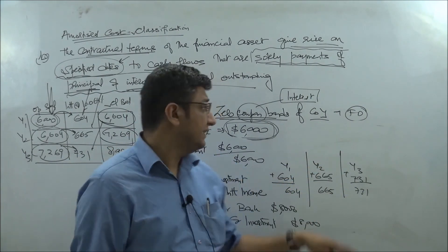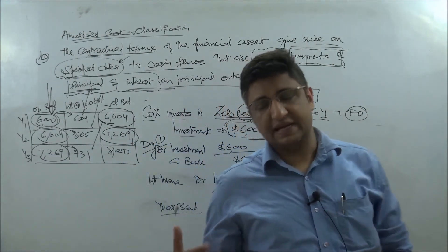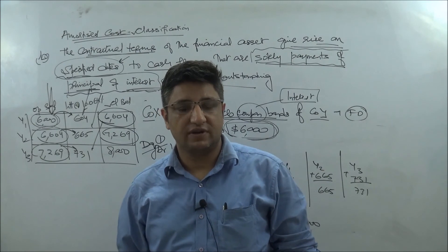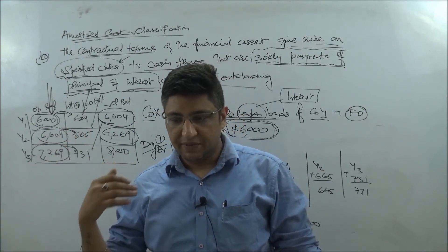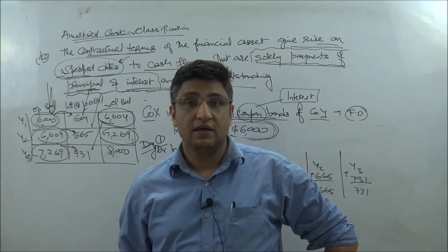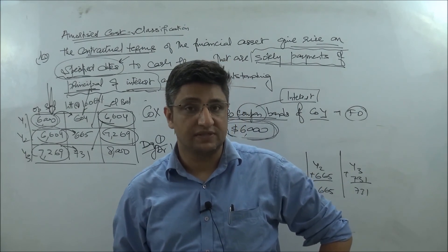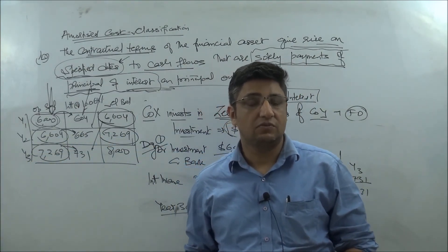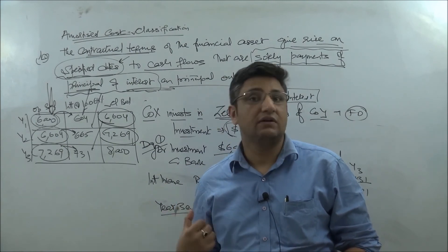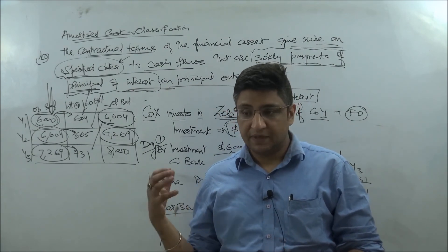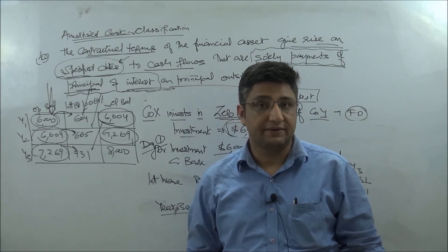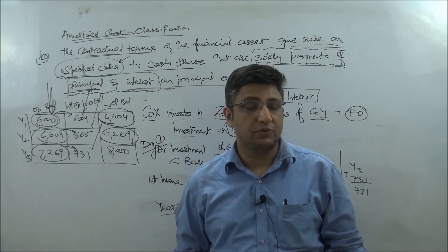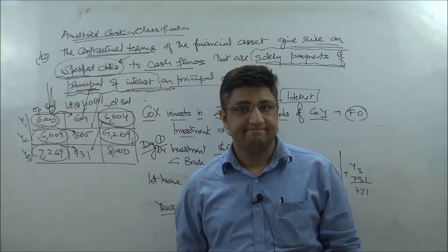Whether you call it a zero coupon bond or a fixed deposit makes no difference — it is quite straightforward. There are many financial assets where the business model test and SPPI condition are clearly met. However, as we mentioned, this topic requires further discussion to understand the areas where the amounts recovered may not necessarily represent the recovery of interest and principal. We will cover all of that in upcoming lectures. Keep watching and subscribe to our channel — all the very best for your preparation.